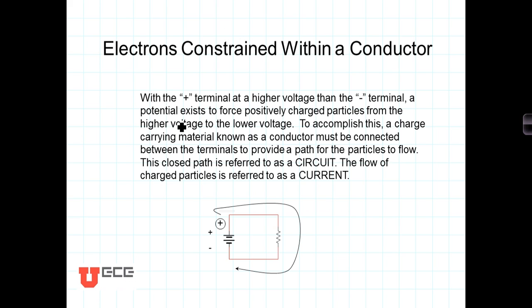Generally speaking, we want electrons to flow in an orderly way — not like water cascading down from mountains, which would be more like lightning. In electrical systems, we want the electron flow to be contained within a conduit called a conductor.